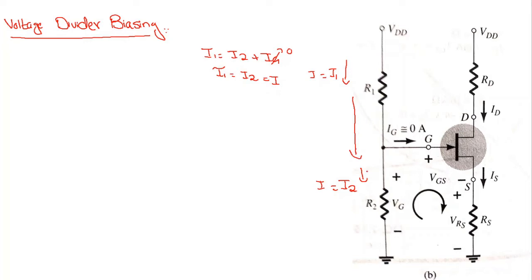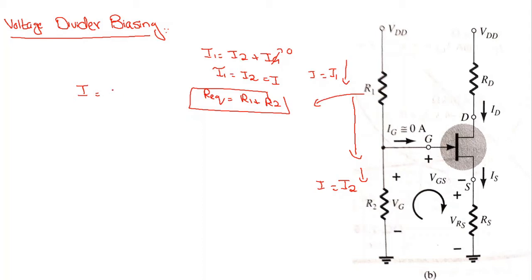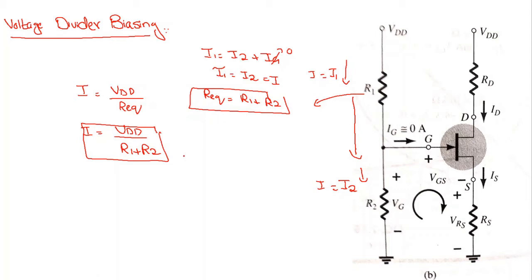So the same current I is flowing in both branches R1 and R2. To find this current, we can use Ohm's law. The equivalent resistance of this branch is R1 plus R2, and using Ohm's law, I is equal to V divided by R. So the current is Vdd divided by R1 plus R2.